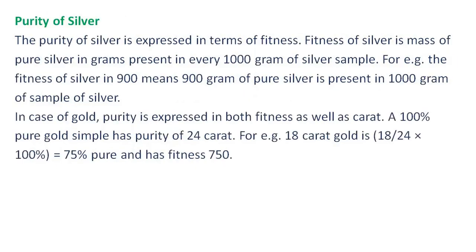Purity of silver: The purity of silver is expressed in terms of fineness. Fineness of silver is the mass of pure silver in grams present in every 1,000 grams of silver sample. For example, a fineness of 900 means 900 grams of pure silver is present in 1,000 grams of sample of silver.